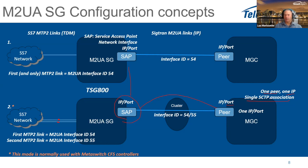An SCTP association is like a TCP connection but can have multiple streams inside — we call it an association. This mode with multiple links in one cluster is typically what is used with MetaSwitch controllers, though other setups may exist with different MGCs.